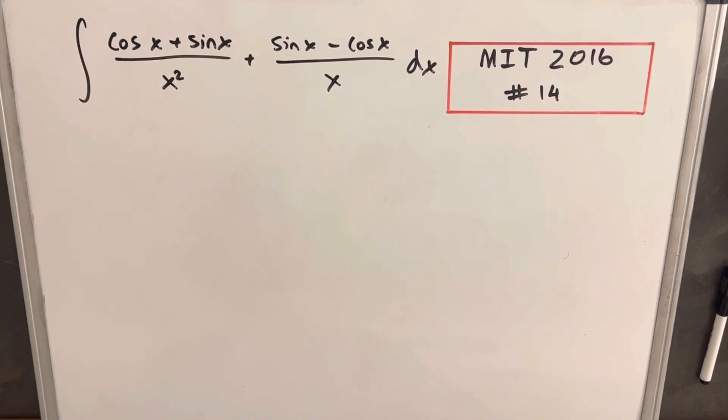Hey, we have here another integral from MIT Integration B 2016, problem number 14. We have the integral of cosine x plus sine x over x plus sine x minus cosine x over x squared dx.